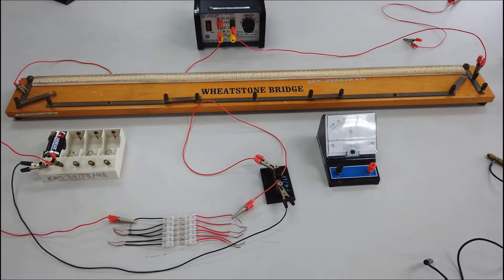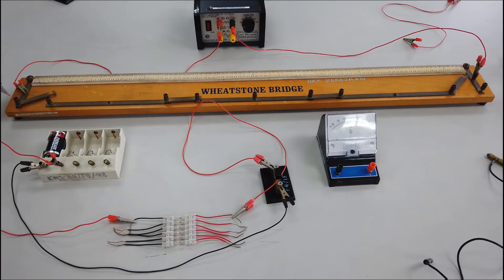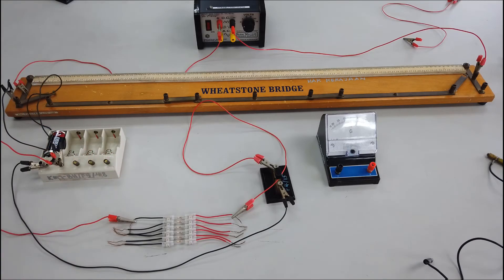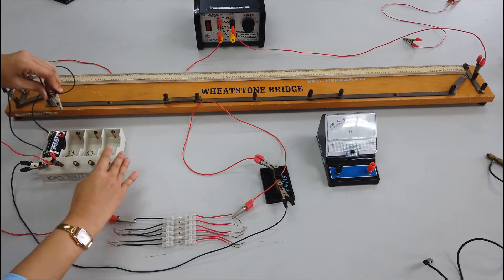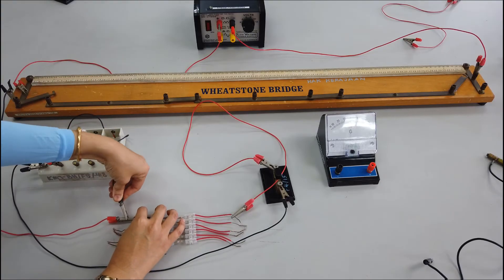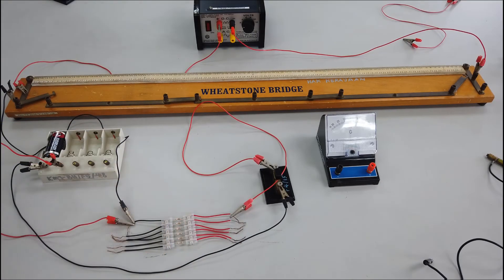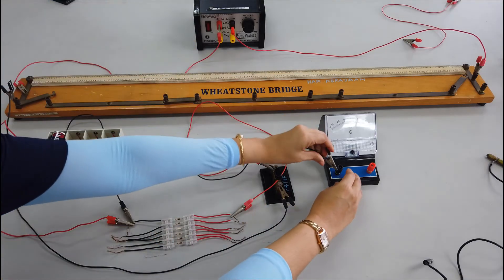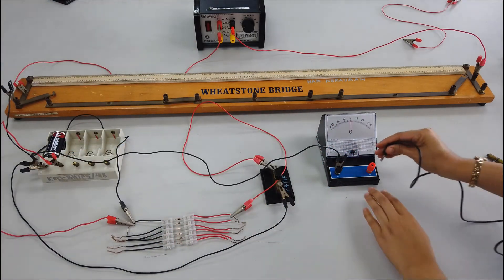Now we are going to connect the upper circuit to the lower circuit. Firstly, connect point A to the positive terminal of the dry cell. Alternatively, we can also connect point A to the variable resistor. Next, connect the negative terminal of the dry cell to the galvanometer. Lastly, connect the galvanometer to the jockey.